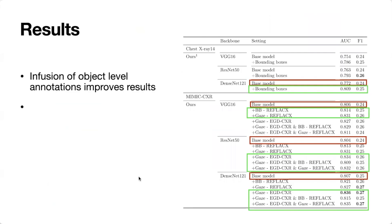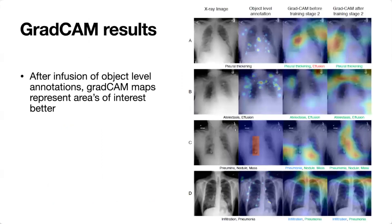The results show that the infusion of object-level annotations does indeed improve results by up to 4%. Moreover, we also show that the infusion of object-level annotations shifts our GradCam saliency maps in the direction of the object-level annotation, which is the desired effect of our method.